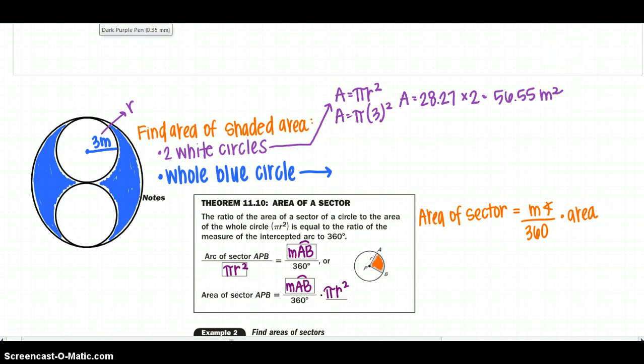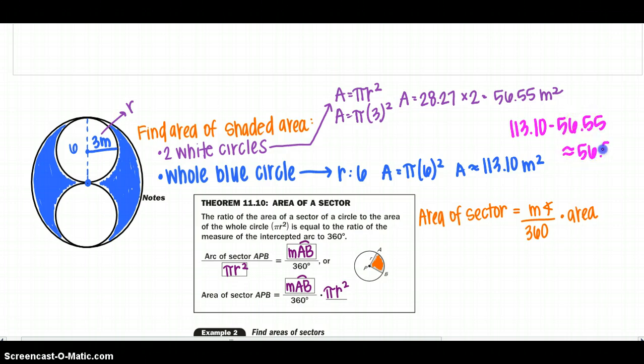Now I want to find my whole blue circle. Well, I know that the two circles intersect at the center, and I know my radius is 3, but my diameter is 6. So I can use 6 as my radius of my big circle to find my area. So I get area equals pi times 6 squared. So my area would approximately be 113.10, and then I'm going to just subtract the two. So 113.10 minus 56.55 gives me approximately 56.55 meters squared for the shaded region.